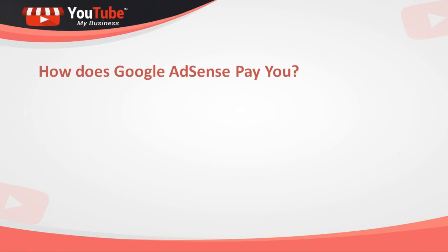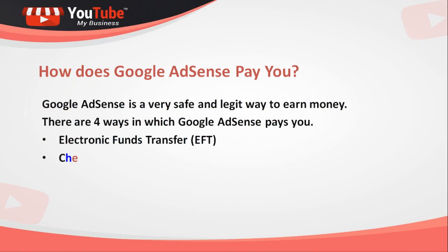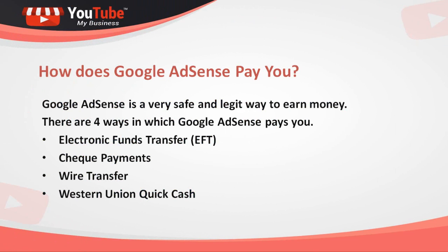How does Google AdSense pay you? Google AdSense is a very safe and legitimate way to earn money. There are four ways in which Google AdSense pays you: Electronic Fund Transfer (EFT), check payments, wire transfer, and Western Union Quick Cash.